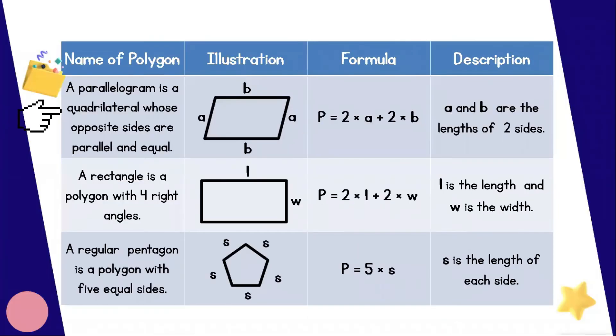The third is the parallelogram. This is a quadrilateral whose opposite sides are parallel and equal. Its illustration is also projected on screen. To solve for the perimeter of parallelogram, we can use 2 times A plus 2 times B, where A and B are the lengths of two sides. The fourth polygon is a rectangle. It has 4 right angles. To solve for the perimeter of a rectangle, we can use 2 times L plus 2 times W, where L is the length and W is the width.